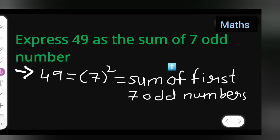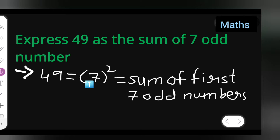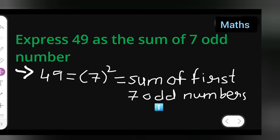We have to express 49 as a sum of 7 odd numbers. So 49 is equal to 7 squared, which is nothing but 49, and this is equal to the sum of the first 7 odd numbers.